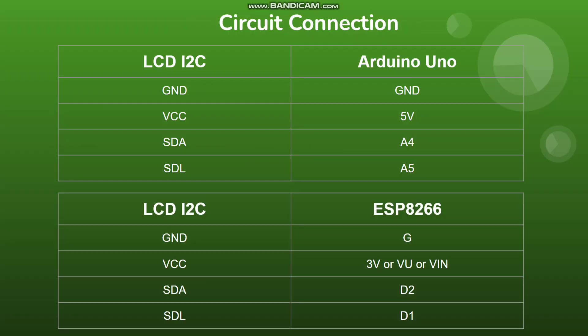Now let me show you the circuit connection. If you are using Arduino UNO, connect the ground from the I2C converter to ground on the Arduino UNO board, VCC to 5V, SDA to D2, and SCL to D1.